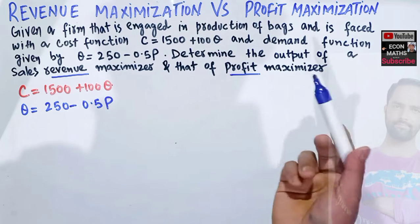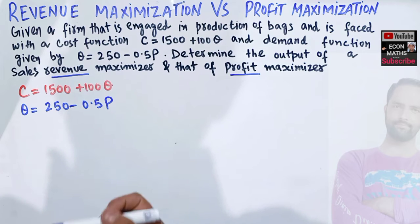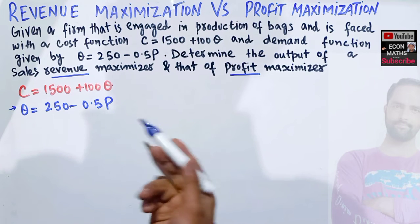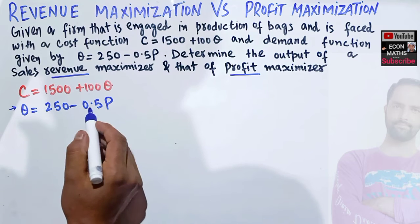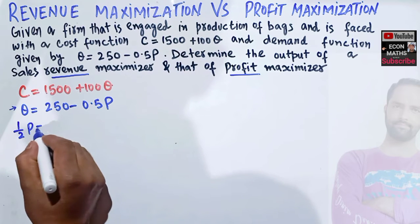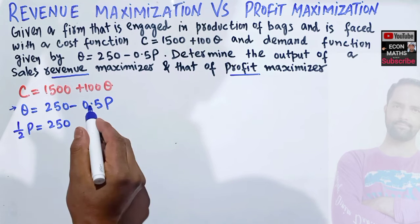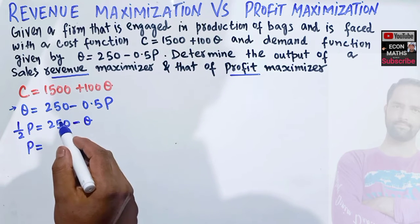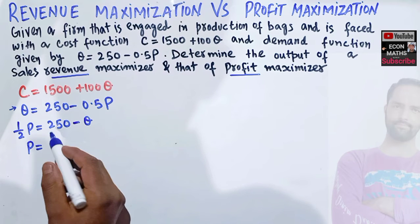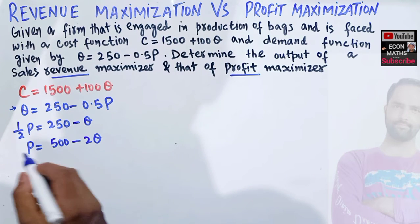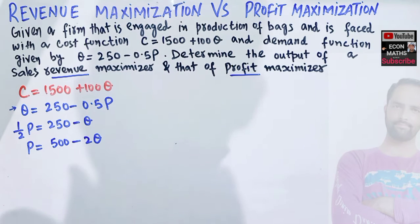First we find the output that maximizes revenue. For that, we need to solve the demand function for price — that is, find the inverse demand function. Since 0.5 is 1/2, transposing gives us (1/2)p = 250 − q, and multiplying both sides by 2 gives the inverse demand function: p = 500 − 2q.